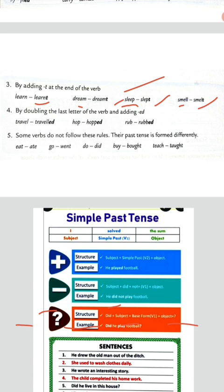Rule four: by doubling the last letter of the verb and adding ED. जैसे travel में last letter है L, L को double करके ED add कर दिया — travelled। Hope में P double करके ED add कर दिया — hoped। Rub का rubbed।